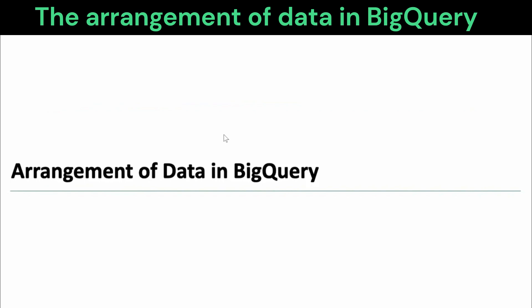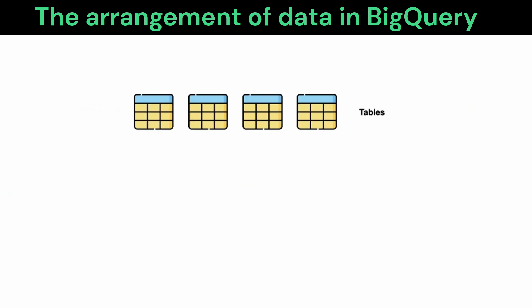Having glimpsed into the architecture of BigQuery, we can move on to something which is a little more tangible to us as users, which is the arrangement of data. To start off, let's take a look at tables, which of course is a data structure where information is arranged in the form of rows and columns.